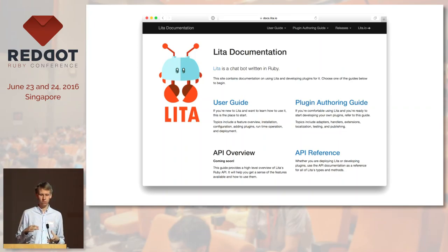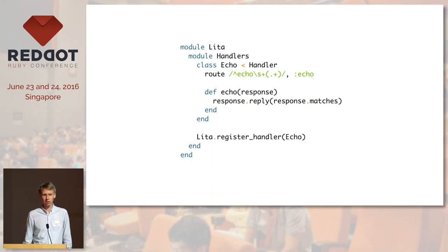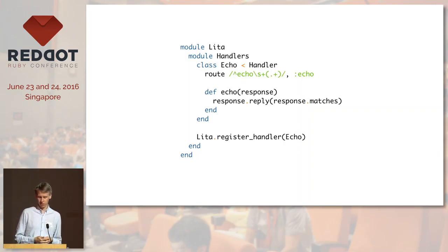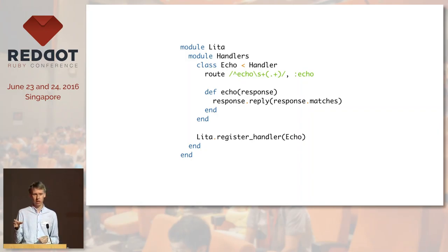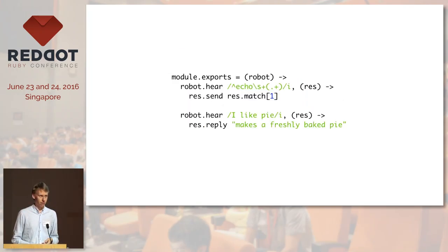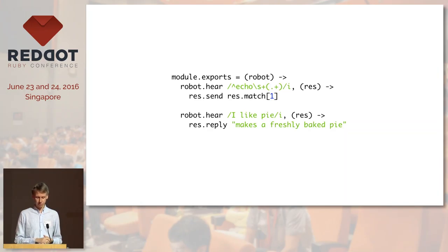Let's see how chat scripts and the DSL look. This is the Lita DSL: you define a small Ruby class which has a macro called route. In this macro you describe a regular expression with the command you'd like to trigger. With this handler, if you go to Slack and write 'echo something', the bot will catch that phrase and reply with the word that comes after echo.